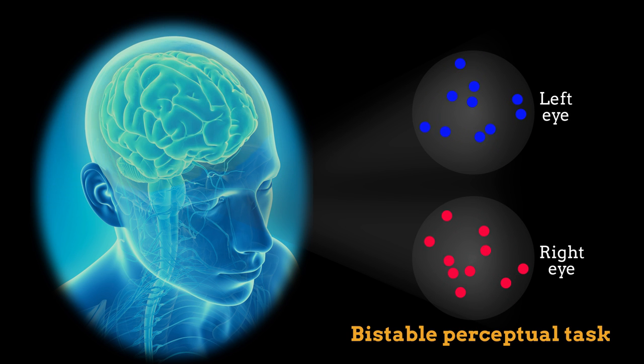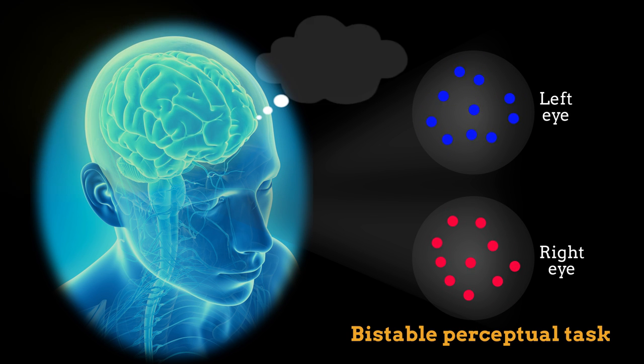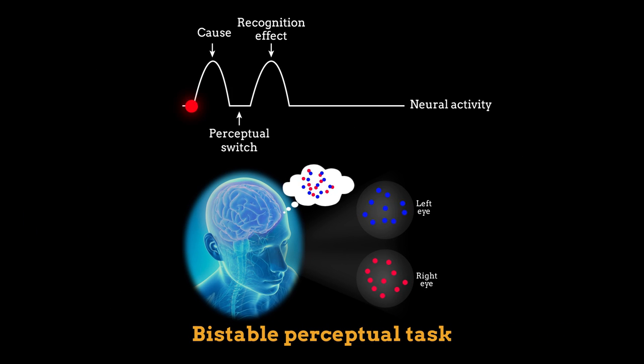Because the motion and position of the dots presented to each eye differed, the participants sometimes perceived the left eye's pattern of dot motion and sometimes the right eye's, but almost never a mixture of the two. Changes in neural activity cause these perceptual switches to occur.